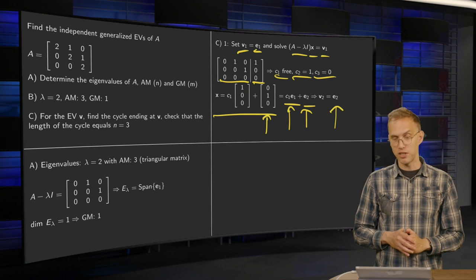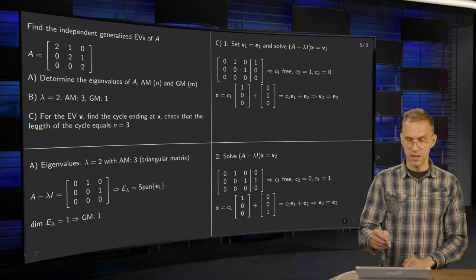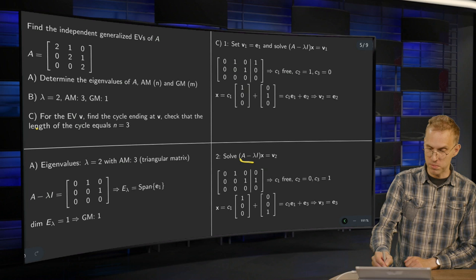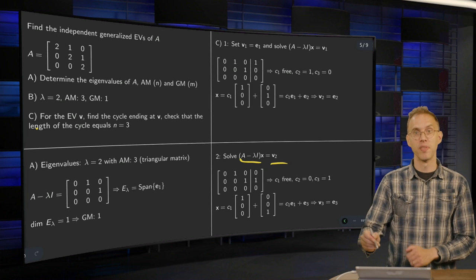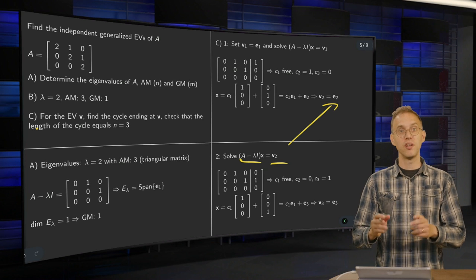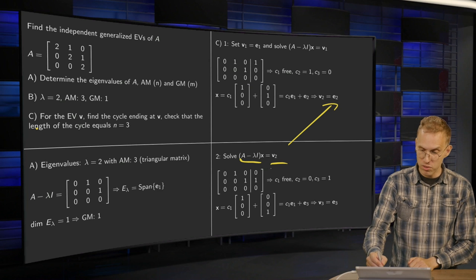Now let's go on to find the third generalized eigenvector. Same trick. But now we have to solve A minus lambda I times x equals V2. Our V2 is E2. So now instead of augmenting with V1, we augment with V2 over here.